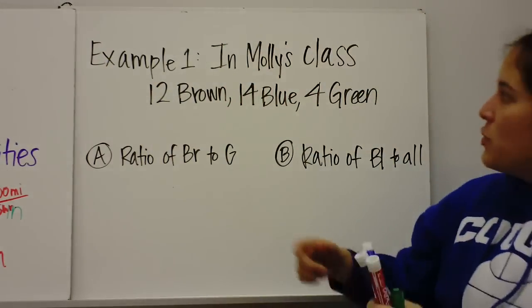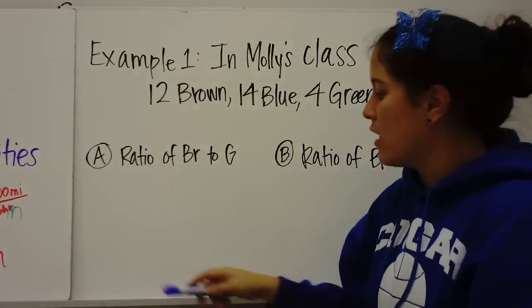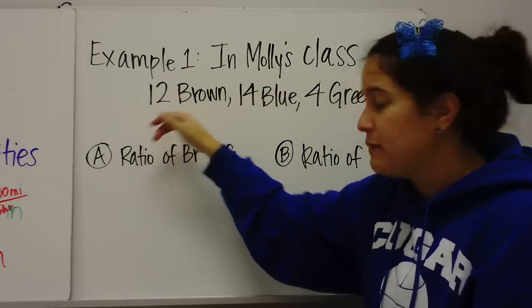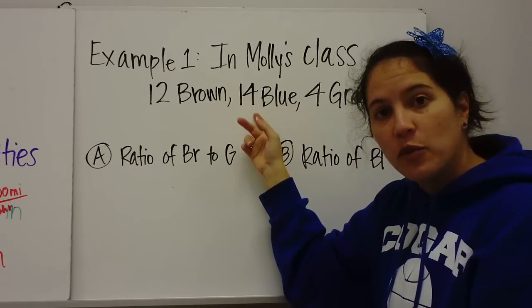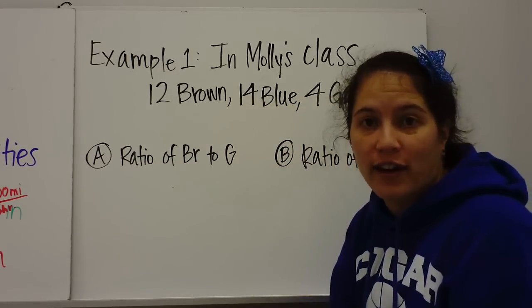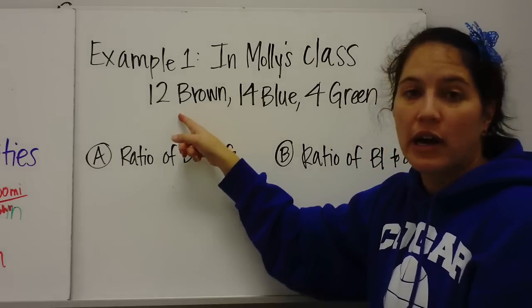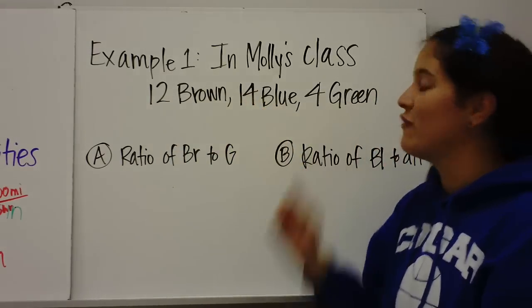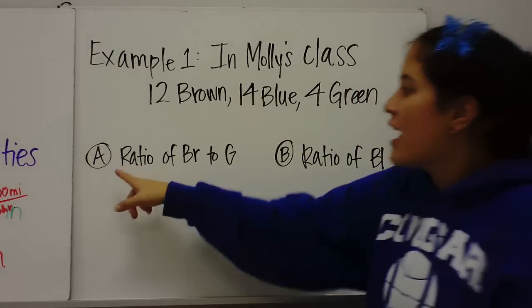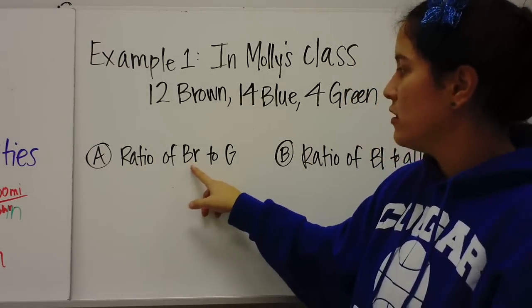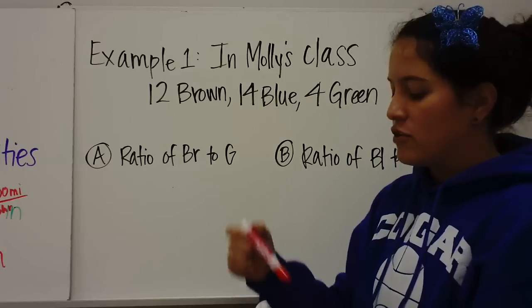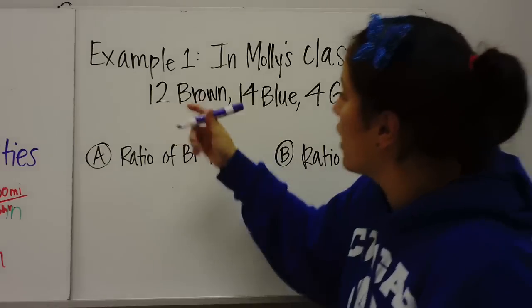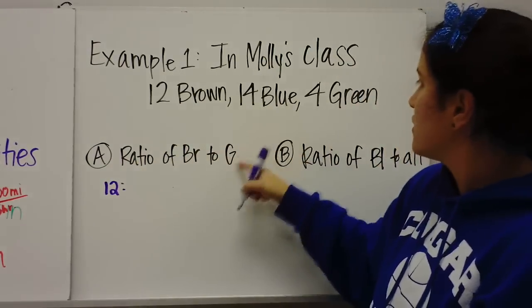All right. So example one. In Molly's class, there are 12 brown-eyed children, 14 children have blue eyes, and four kids have green eyes. So that's in Molly's class. 12 brown eyes, 14 blue, and four green. So we're talking about eyes. A, write a ratio of brown to green. So to write a ratio, three ways. First we need to find brown. So there's 12 brown and four green.